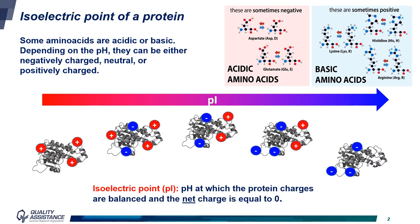Some of the amino acids, which are building blocks of proteins, are acidic or basic and have a charge state which depends on the pH of the solution. They are either positively charged, negatively charged, or neutral. In addition, proteins are commonly defined by their PI value — their isoelectric point — which corresponds to the pH at which the protein has a net charge of 0.